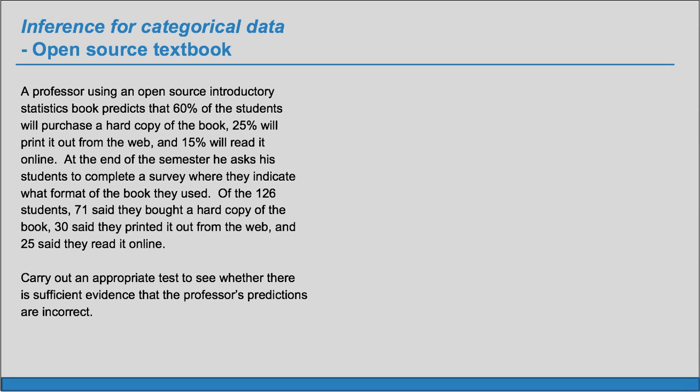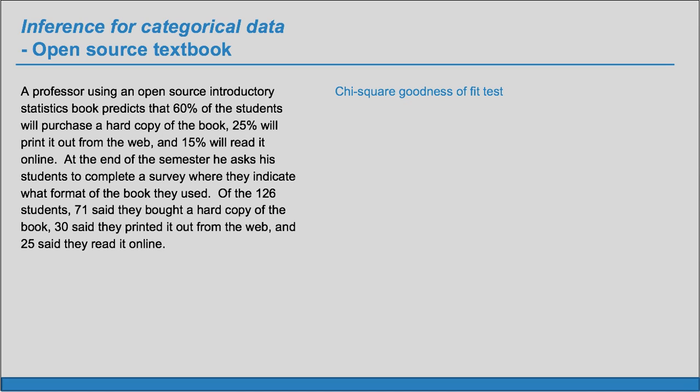We have one group of people, and instead of a yes-no, we have three categories. So we can't do a one-proportion z-test because we have three categories, so we're going to do a chi-square goodness-of-fit test.